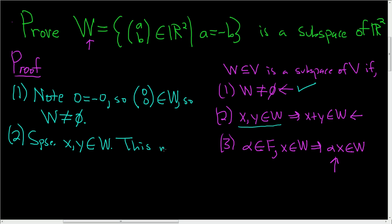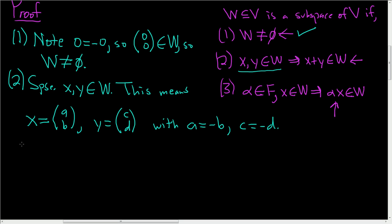And then all we do is write down what that means. So this means X, well, how do I know what to write down here? Well, you just look up here. All of the vectors in W have this form AB. So X can be written as AB. And likewise, Y, it also has that form. So we'll use different letters, CD. With, and what does it mean for X to be in W? Well, it means that A is equal to negative B. And what does it mean for Y to be in W? Well, it means that C is equal to negative D.